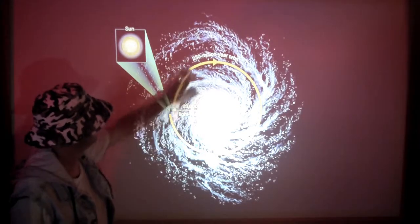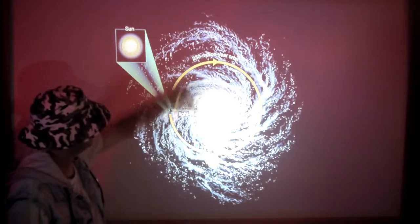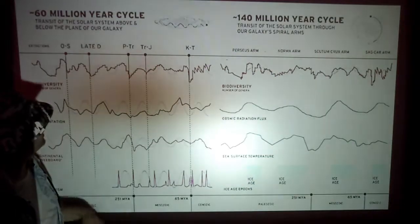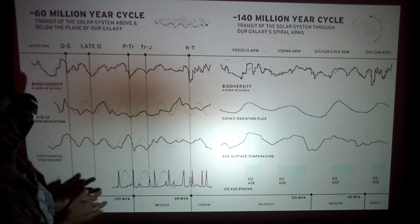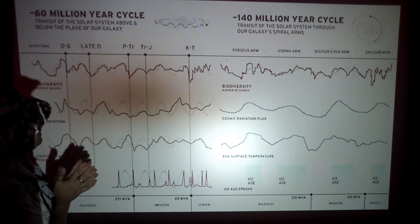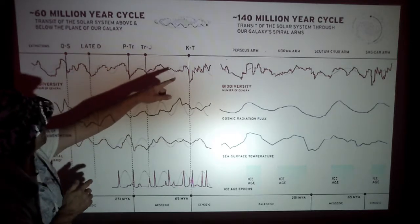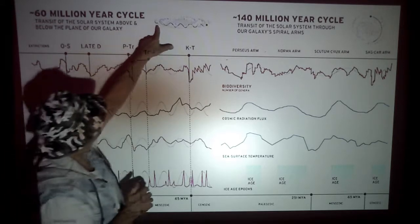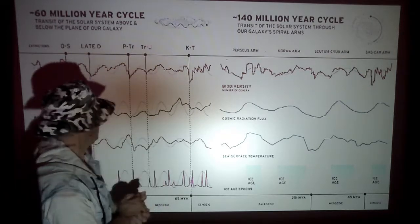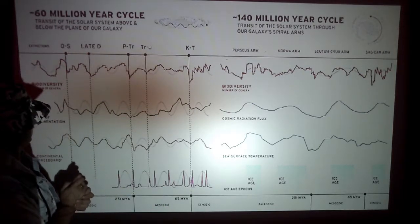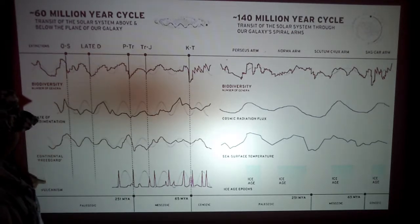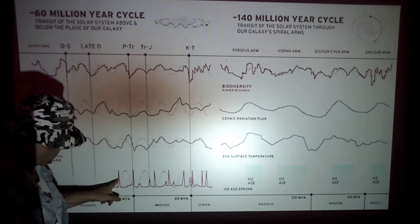Once again, an artist rendition of the Sun going around our galaxy. This one shows the 60 million year cycle transit of the solar system above and below the plane of our galaxy, and the 140 million year cycle transit through the galaxy's spiral arms. So that's roughly 30 million years for each pass through the galactic plane, which aligns with our 33 million year estimate.